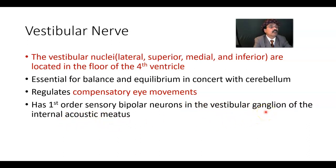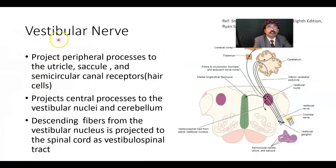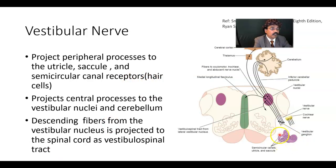A ganglion is a collection of nerve cells outside the central nervous system. The first-order sensory bipolar neuron is located in the vestibular ganglion of the internal acoustic meatus. The vestibular nerve projects peripheral processes to the utricle, saccule, and semicircular canal receptors — these are called hair cells, located in the semicircular canal with the utricle and saccule.